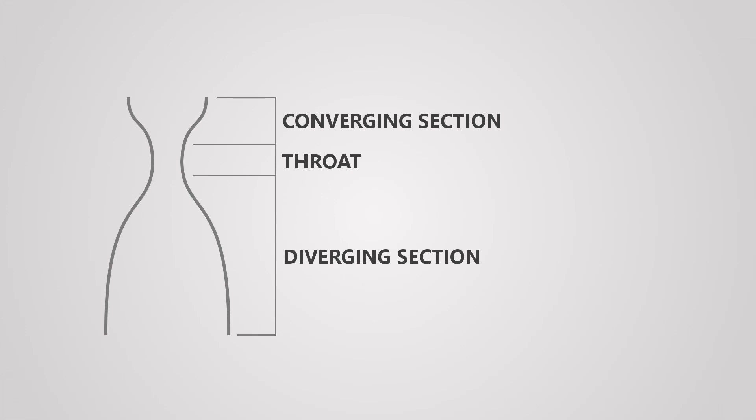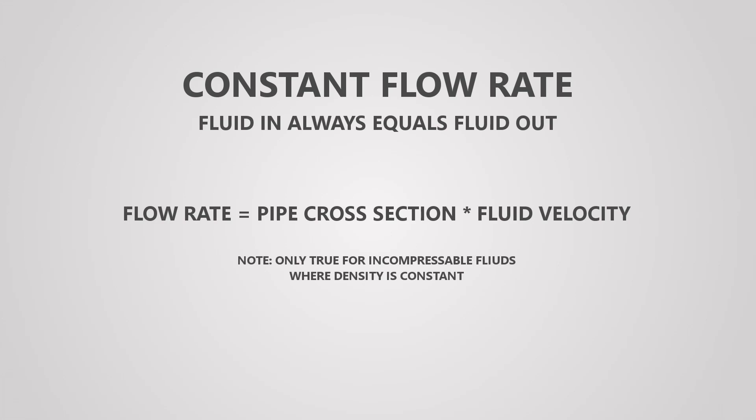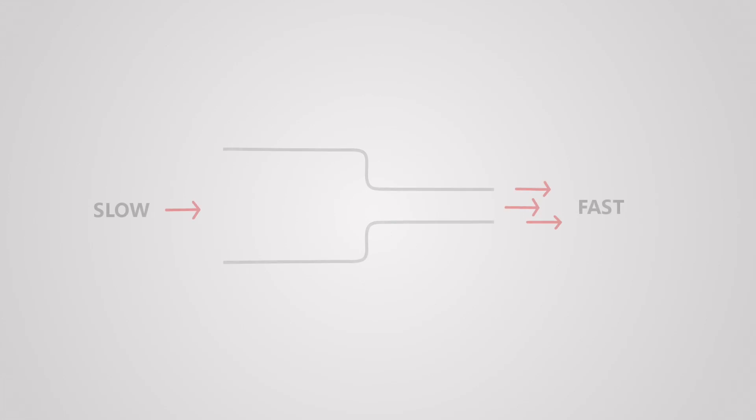To understand how this nozzle works, you first need a quick crash course in fluid dynamics. Flow rate through a pipe is constant for incompressible flows — the amount of fluid moving through any section of the pipe is always the same, even if the size or shape of the pipe changes. Flow rate is equal to the velocity of the fluid multiplied by the cross-sectional area of the pipe, so if the cross-section becomes smaller, the velocity of the fluid must increase for the flow rate to stay the same.